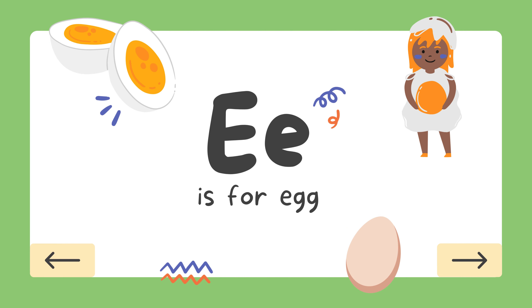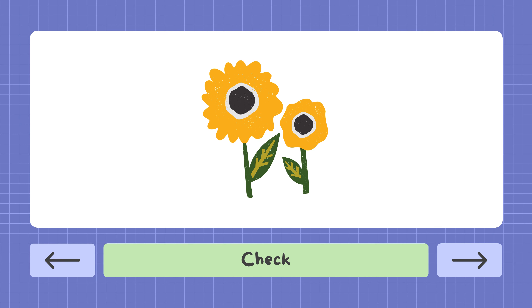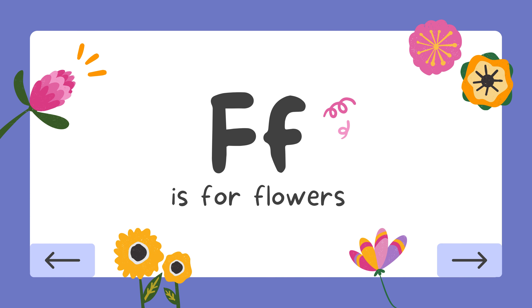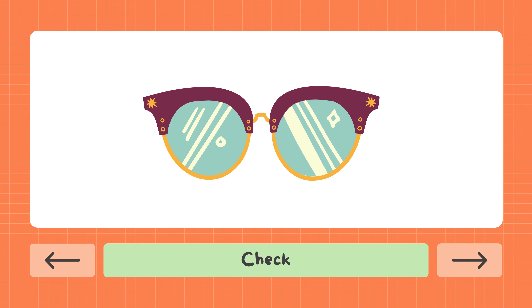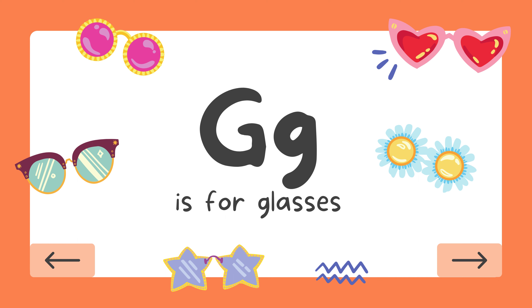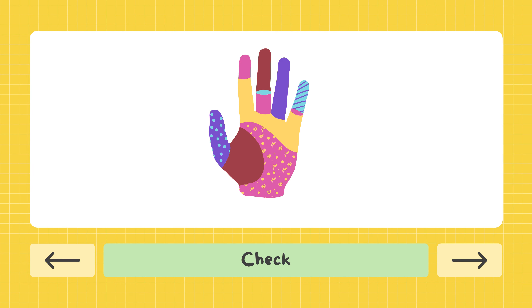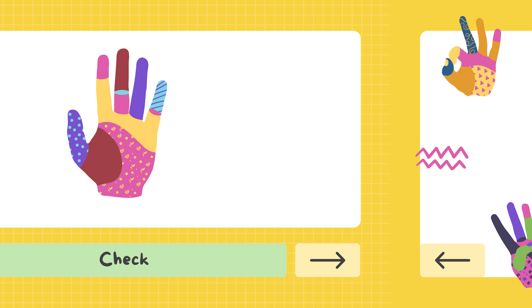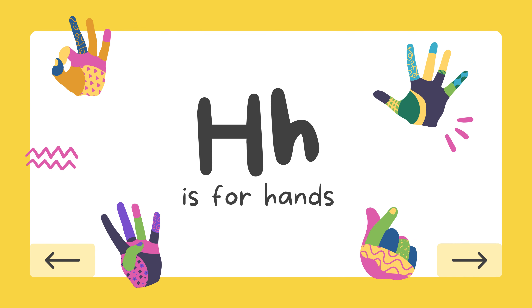E is for Egg. F is for Flowers. G is for Glasses. H is for Hands.